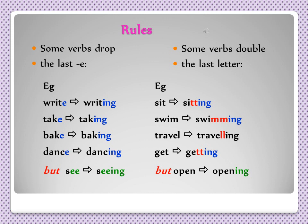Now there are some spelling rules for adding 'ing' to verbs. Some verbs drop the final 'e': take → taking, bake → baking, dance → dancing. But 'see' → seeing — we don't drop the 'e'. Some verbs double the last letter: sit → sitting, swim → swimming, but 'travel' → traveling, and 'get' → getting. 'Open' stays opening — no doubling. These are exceptions you need to memorize.